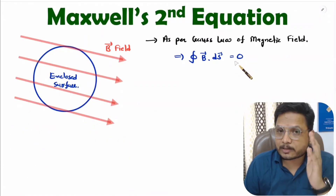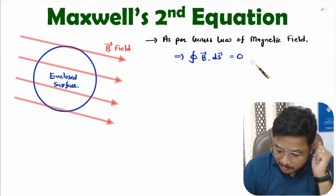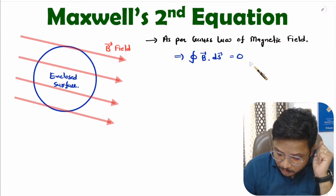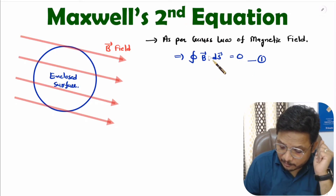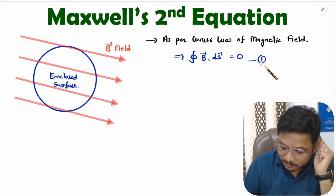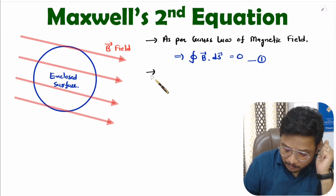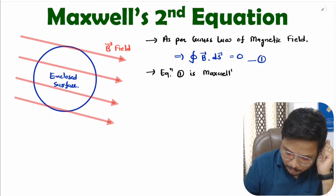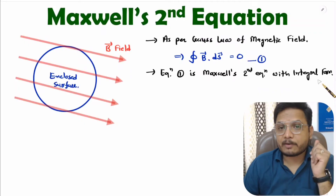That is Gauss's law of magnetic field, and this is also Maxwell's second equation in integral form. If we call this equation one, then equation one is Maxwell's second equation with integral form.